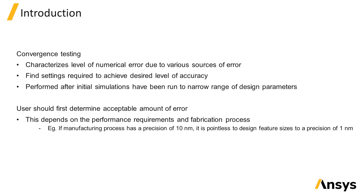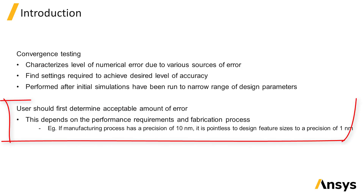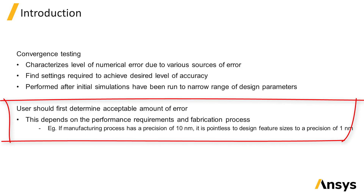Before any convergence testing is done, it's important to first determine an acceptable level of error for the particular device being simulated. For example, it's not necessary to resolve the sizes of features down to a precision of 1 nanometer if you know that the manufacturing process used to fabricate the device can only achieve an accuracy of 10 nanometers.